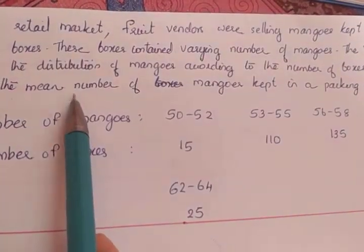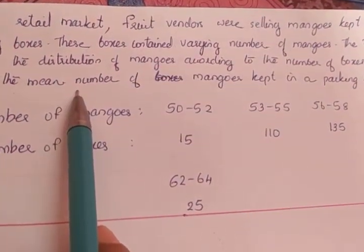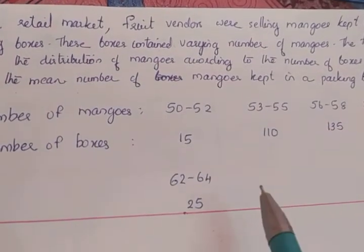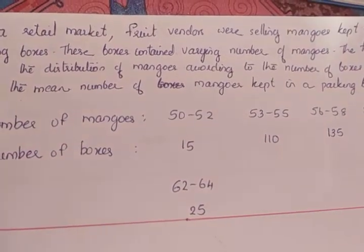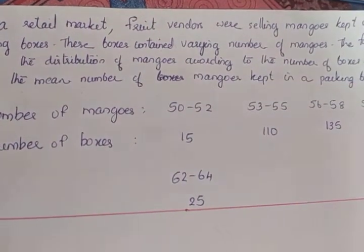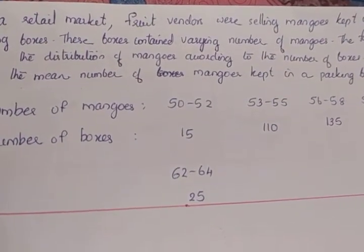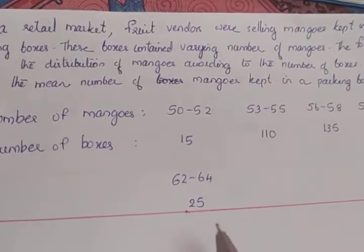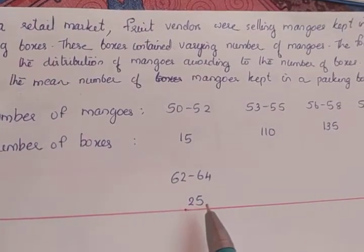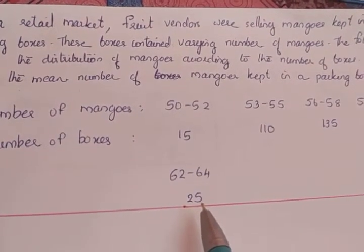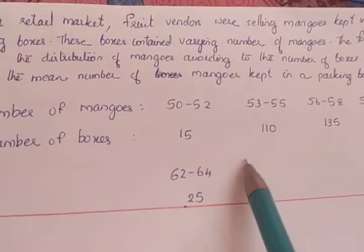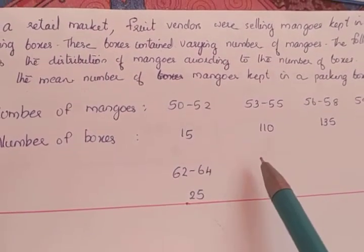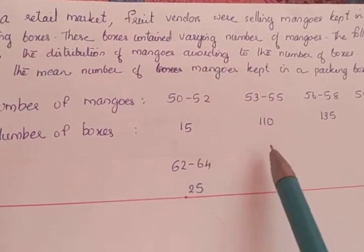We have to find the mean number of mangoes. We are going to apply the step deviation method. CBC has already deleted this portion from the syllabus, but we will still try this question using the step deviation method. We can also do this using the direct method or the assumed mean method, but we will go with step deviation.